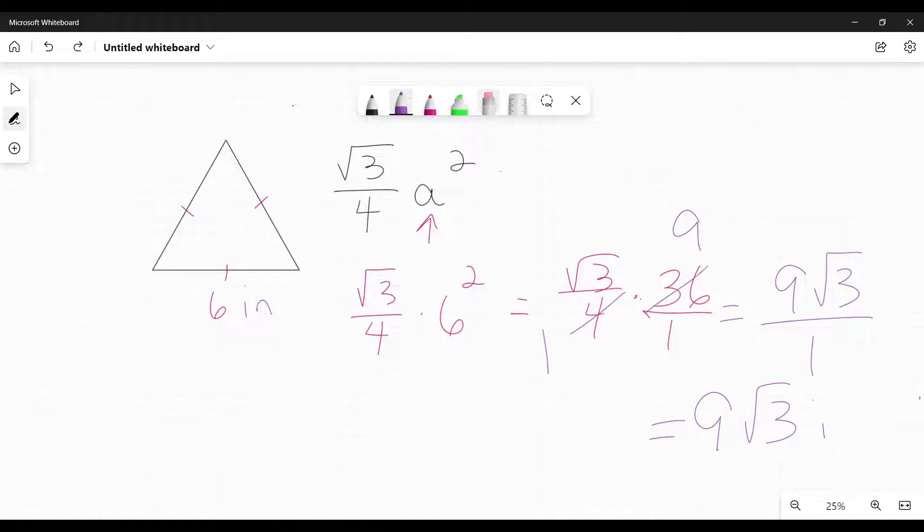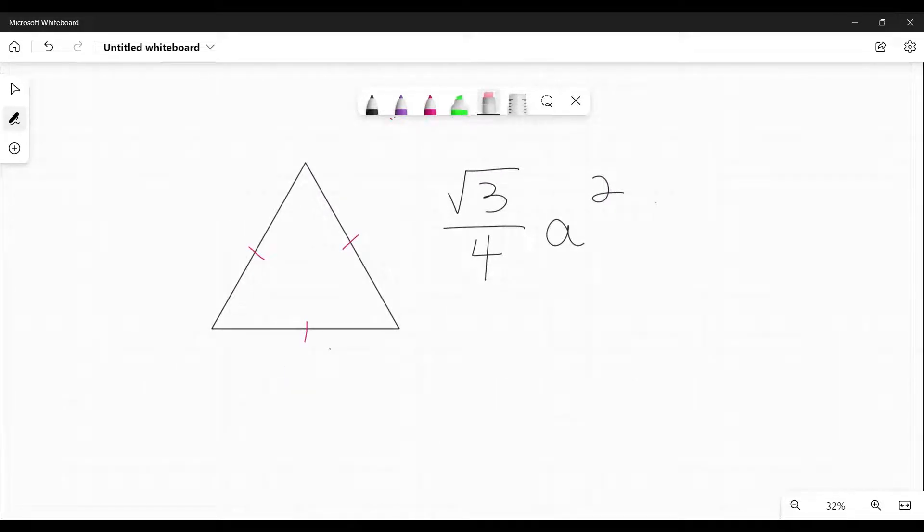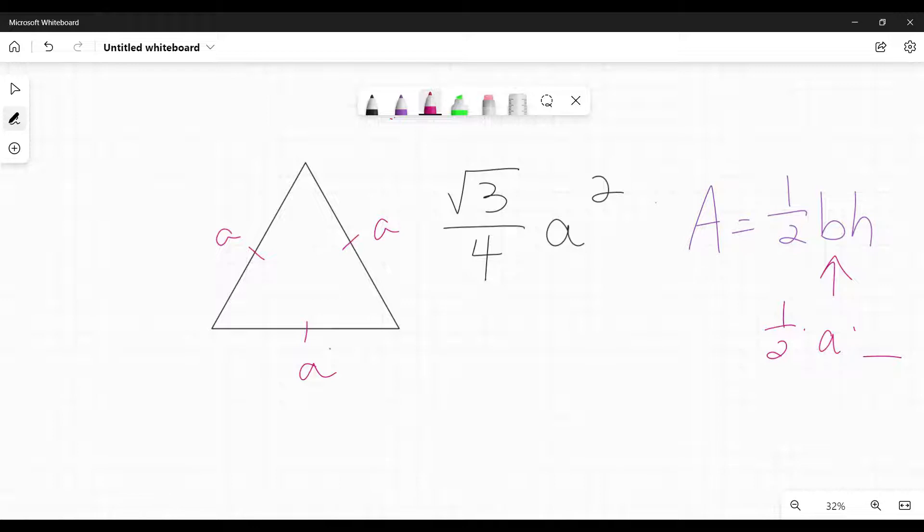All right. Next part. Let's go into where this comes from. It looks so different from our normal formula. The one we use more often is area equals one half base times height. So where did this come from? Well, if I'm calling each side A, then first off, what would be my base? My base would be A. So I'm going to go ahead and plug that in. So one half times A. And now I just need a height. What would the height of this triangle be?